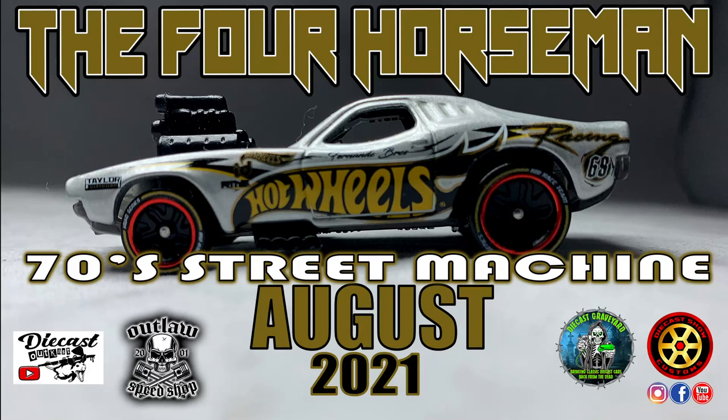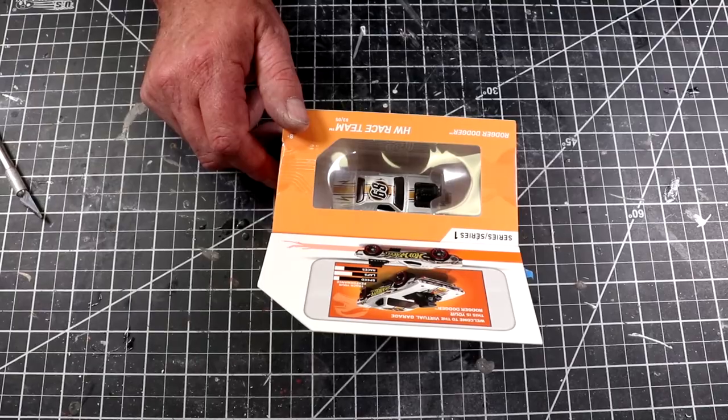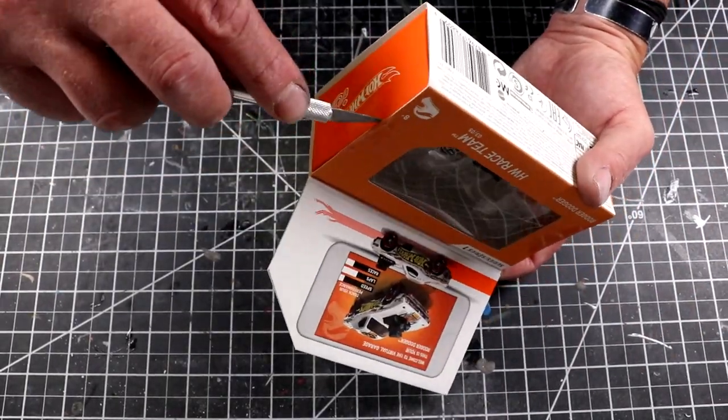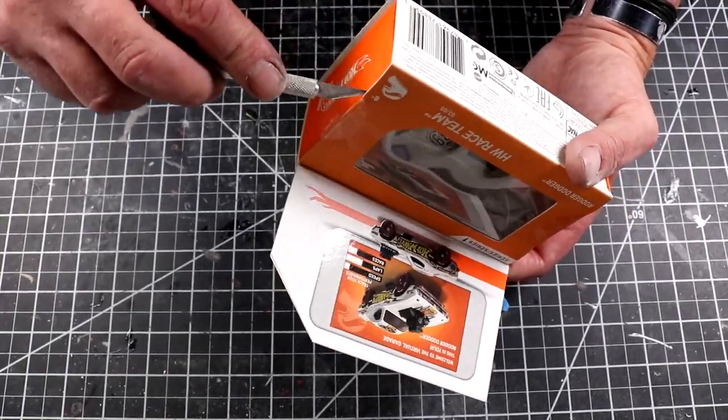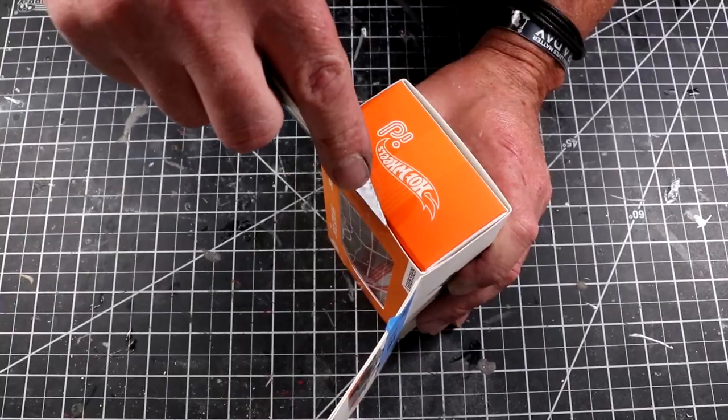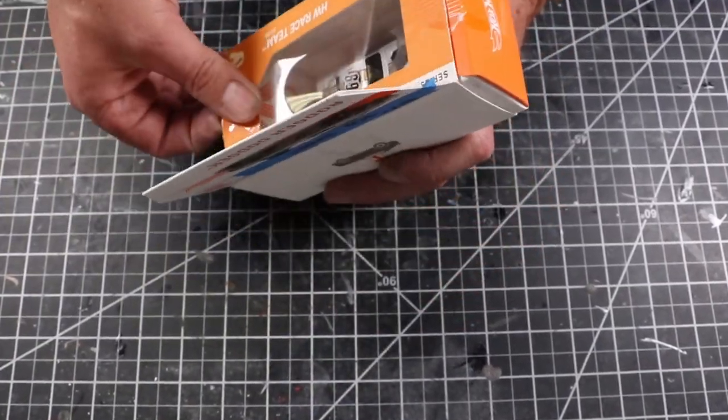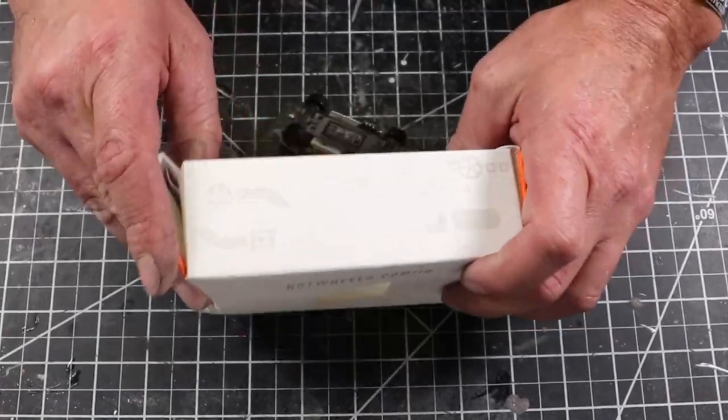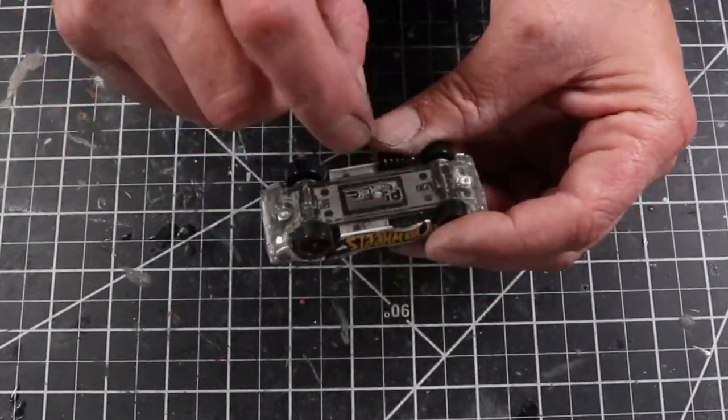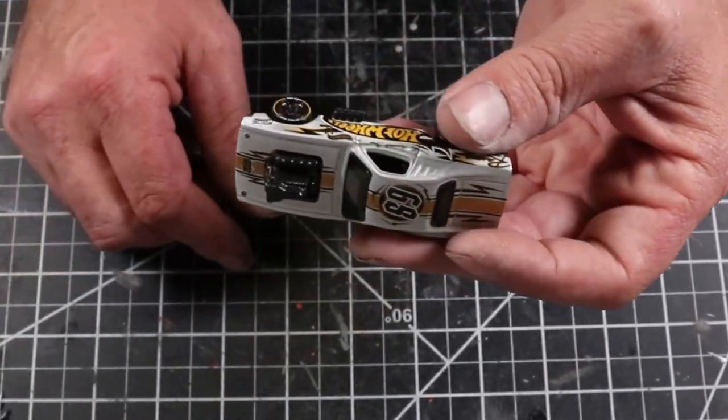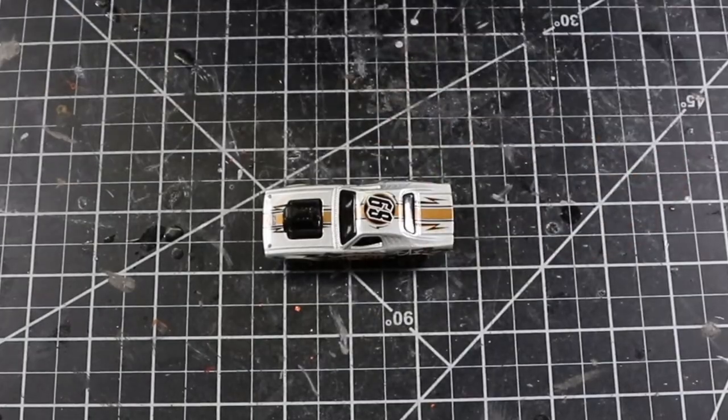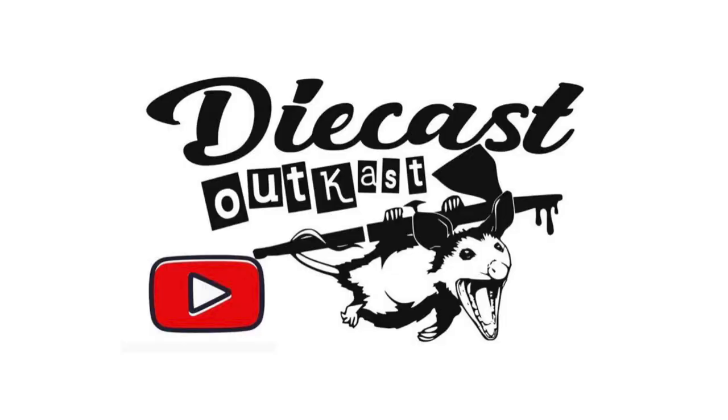Hey, it's Keith from Outlaw Speed Shop. The Four Horsemen build for August 2021 is a 70s street machine Roger Dodger. I happen to have the ID version, which was my theme this month, so I sent it out to the other three guys. I love this particular casting for a lot of reasons, mainly from childhood - plastic base, see-through, really cool car, one of my favorites of all time.